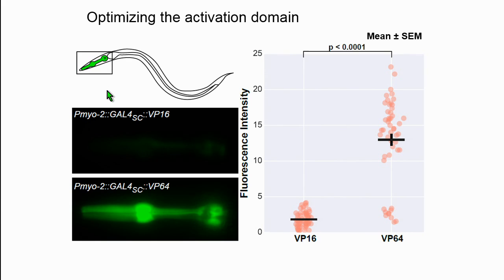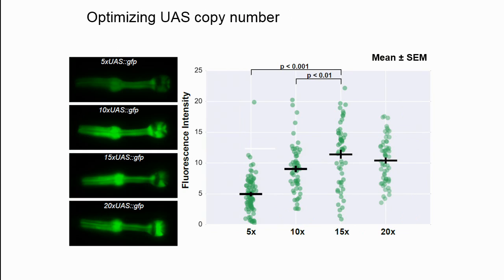First, we looked at the activation domain. We used the Myo2 promoter driving expression in pharyngeal muscles, with a GFP effector as a readout. We tried two domains: VP16, an activation domain from human herpes virus, and VP64, which is four tandem copies of VP16. VP64 vastly outperforms VP16 — about a seven-fold increase in expression. So we decided to use VP64 as our activation domain of choice.